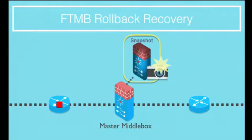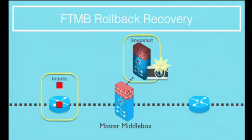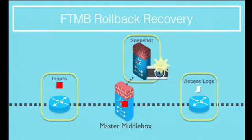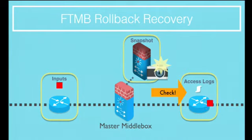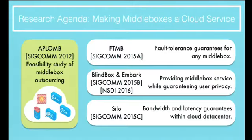To recap: FTMB uses rollback recovery to restore lost state after a master middlebox goes down. We log all packets at the input logger, generate packet access logs to counteract non-deterministic events at replay time and store them at the downstream switch. We never release a packet unless we have everything needed to guarantee we can replay the system up to and including that very packet.